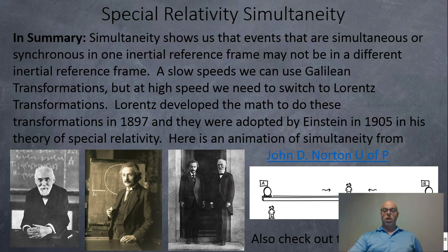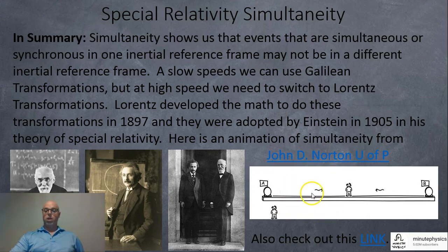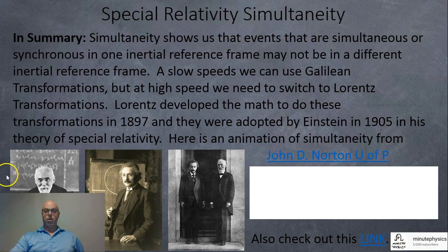And if you are interested in more examples, there's a great example here by John D. Norton at the University of Pennsylvania. He made this animated GIF which shows how what's simultaneous for one reference frame is not simultaneous for the other. For example, the two flashes arrive at this person in the middle at the same time. But this person here, who's moving, will see this flash first and then this flash B later. Also, if you want a really good explanation, click on this link and you can go to Minute Physics. And this person here has an excellent example of simultaneity. I hope this helps. Thanks.